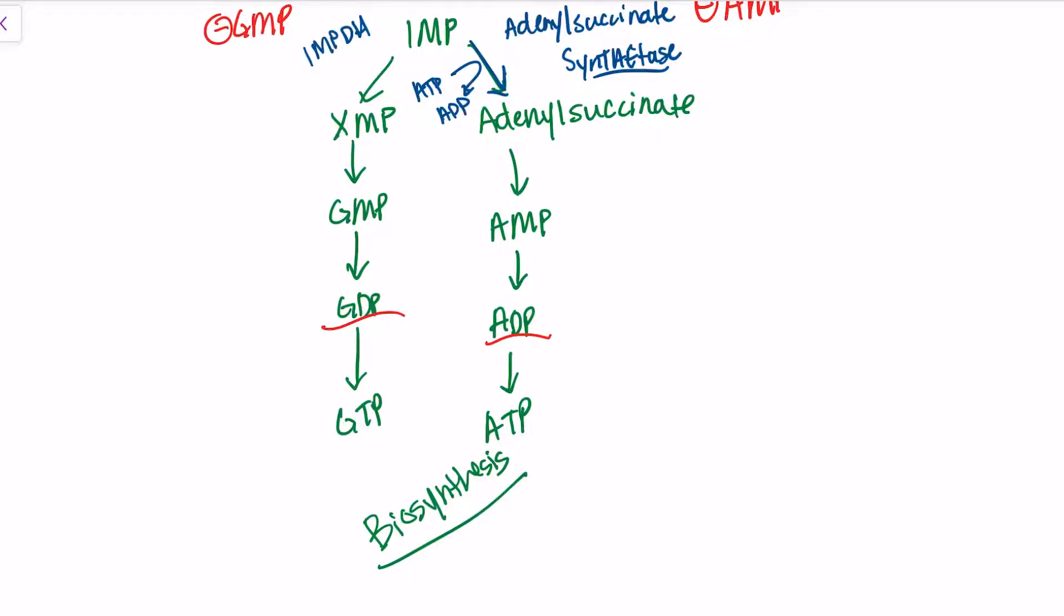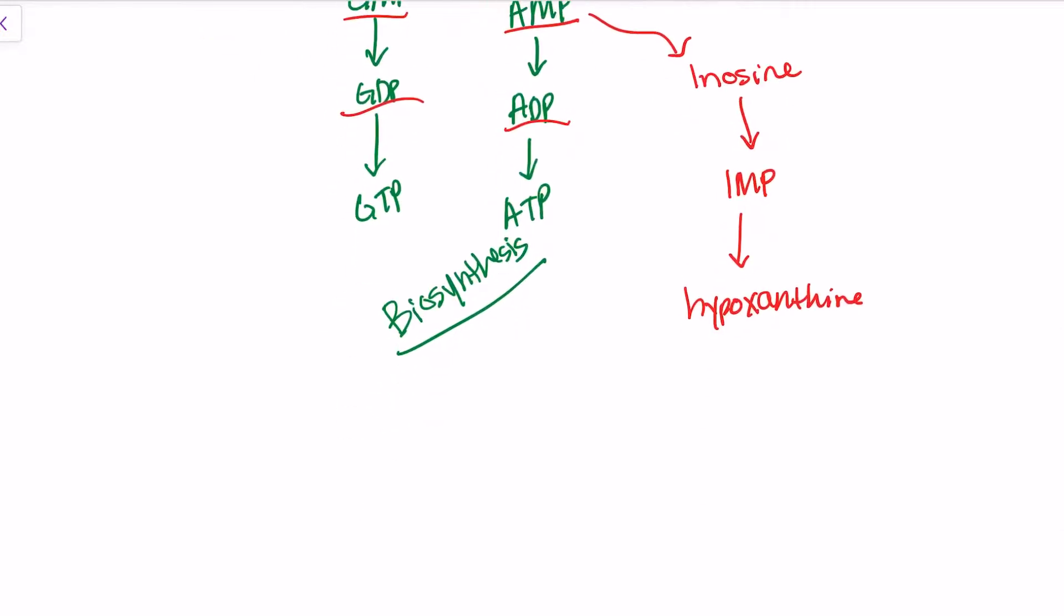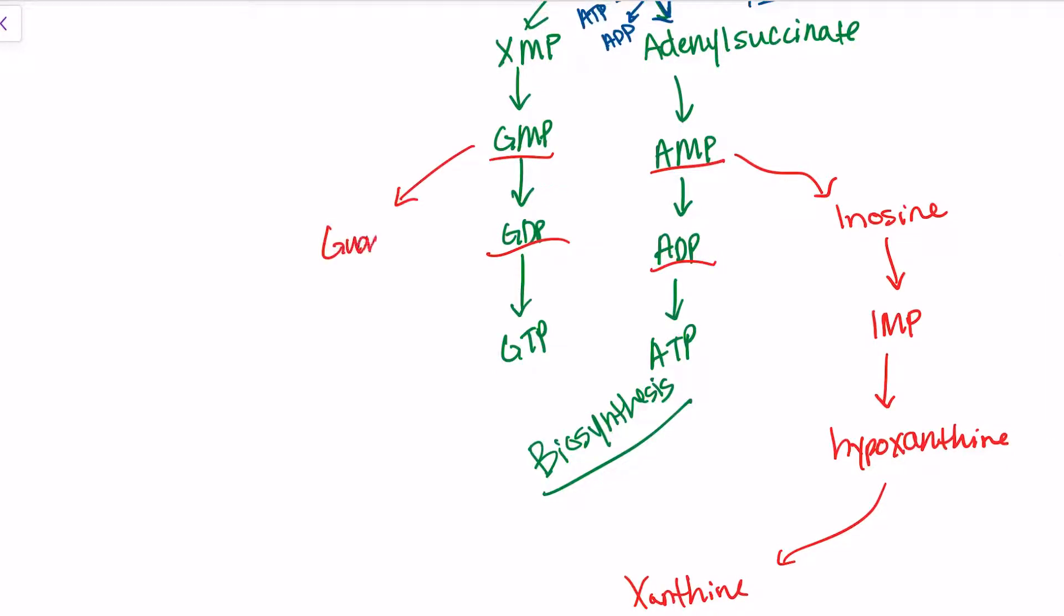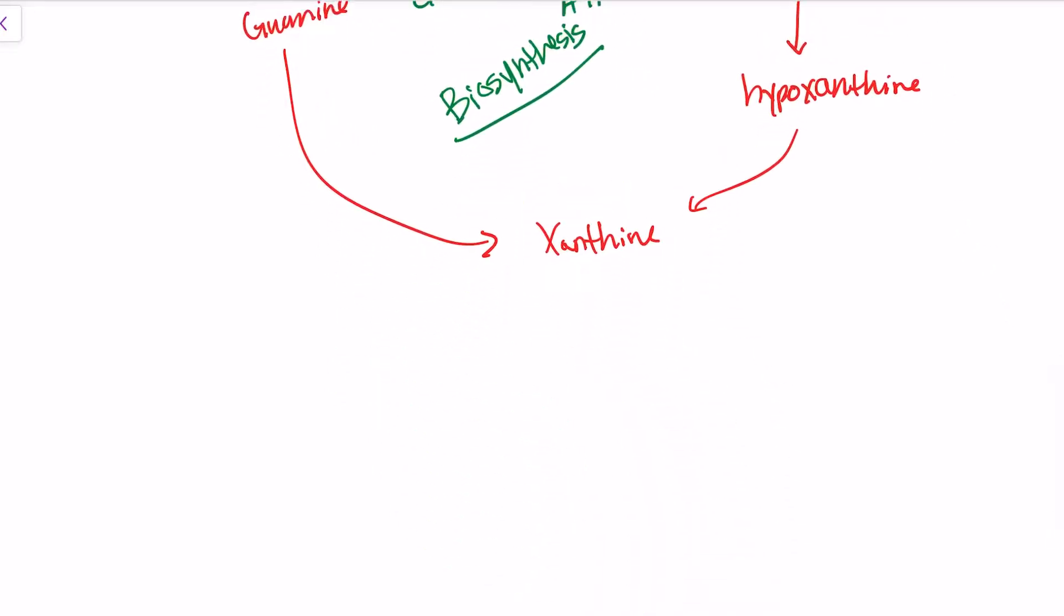Moving on to degradation. It comes from our monophosphates. We start with AMP going to inosine, inosine to IMP. Now we've gotten back to what we started with. Then it goes to hypoxanthine, and hypoxanthine goes to xanthine. Over here, we have GMP going to guanosine, then to guanine, and back to hypoxanthine. From xanthine, we go to uric acid.